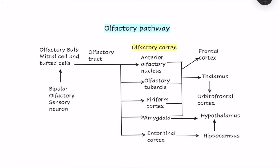The olfactory pathway is the exception among sensations because it directly reaches certain cortical areas without passing through the thalamus. Axons from mitral cells and tufted cells travel via the olfactory tract — which is formed by the axons of mitral and tufted cells — while the olfactory nerve is formed by axons of bipolar olfactory sensory neurons.